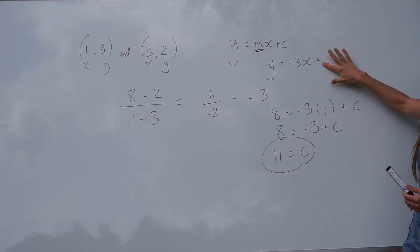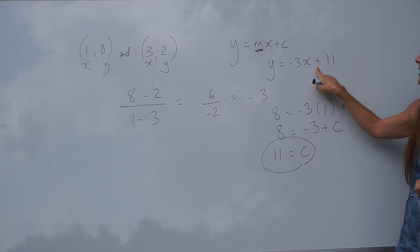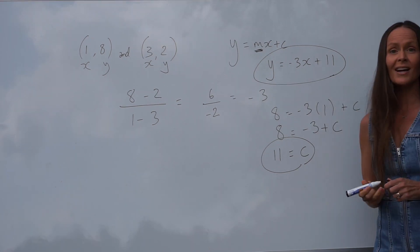So you can change your c value to 11. And it's positive, so we have plus. So that's the equation of the straight line.